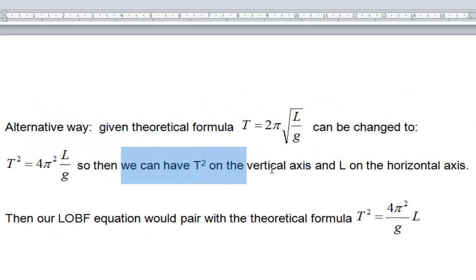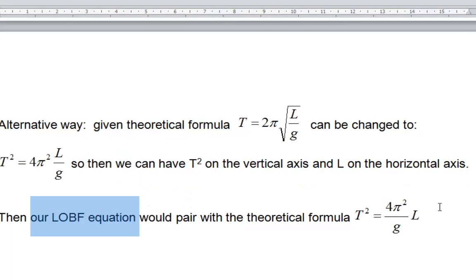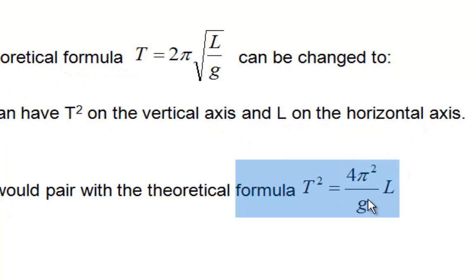Now, what that translates to is we're going to have T squared on the vertical axis and L on the horizontal axis. And when we finally get to our line of best fit, this formula here can be used to compare with our gradient.